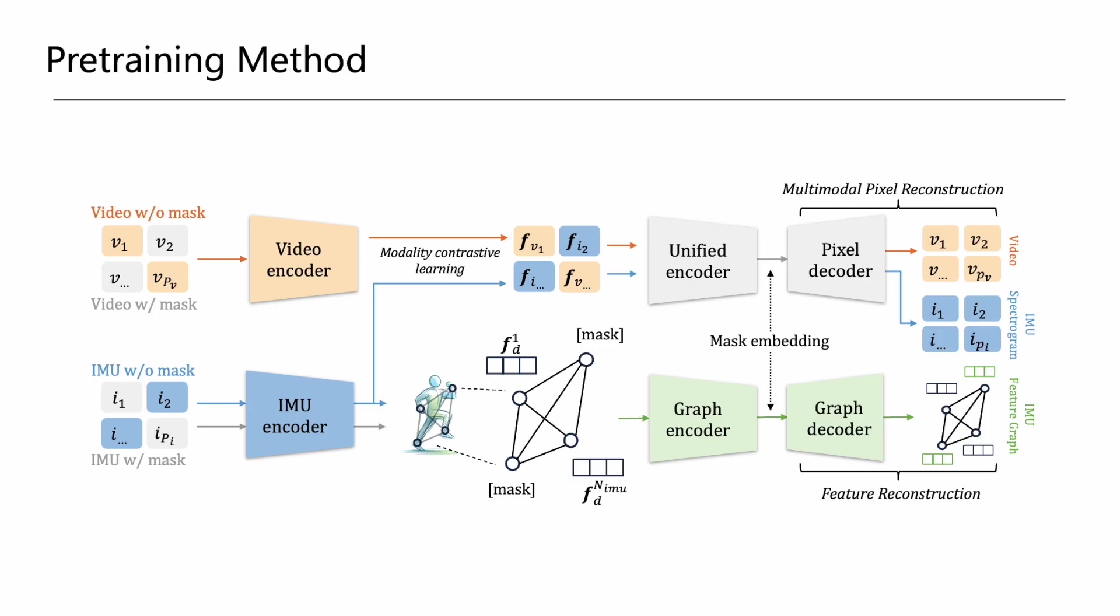In the IMU feature reconstruction branch, we shift our focus from the patch level to the IMU device level, aiming to capture the complex relationships between the features provided by different IMU sensors. We model these relationships using an IMU feature graph, where each node represents a sensor, and we further mask some of the nodes.